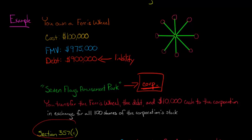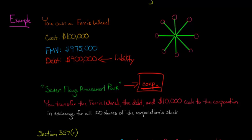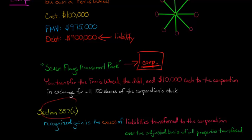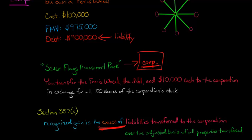Section 357C has a very interesting rule. Generally, liabilities transferred to the corporation are not boot. But Section 357C of the tax code says that you could have recognized gain if the amount of liabilities that you're transferring to the corporation exceeds the adjusted basis of all properties that are being transferred.